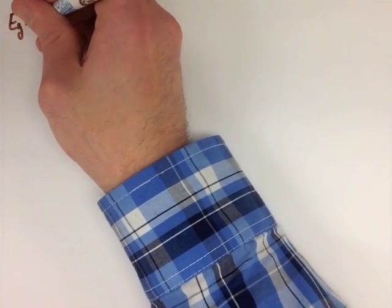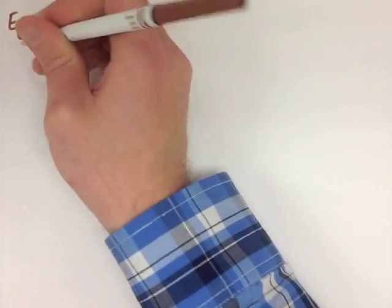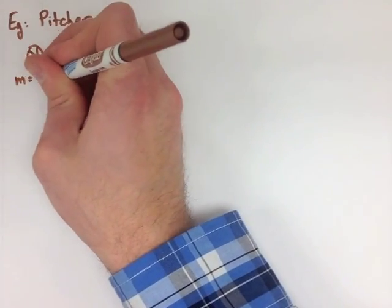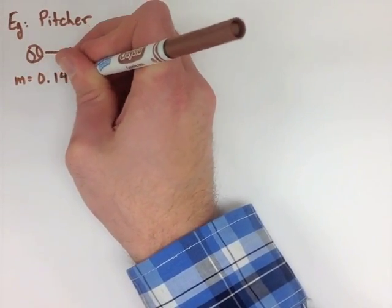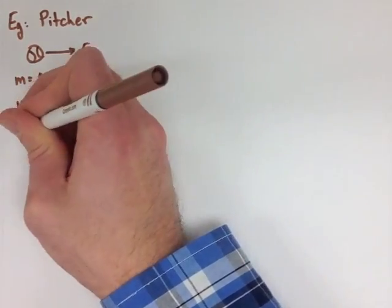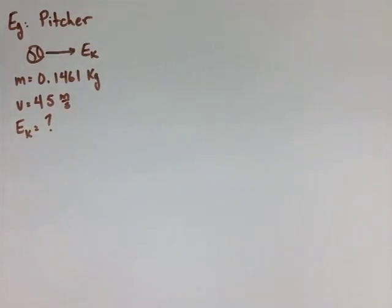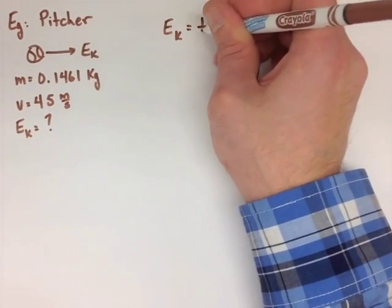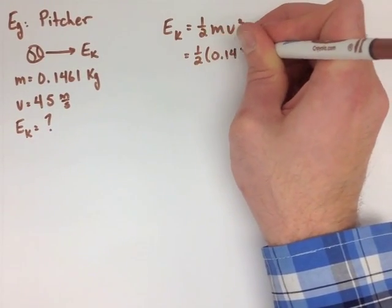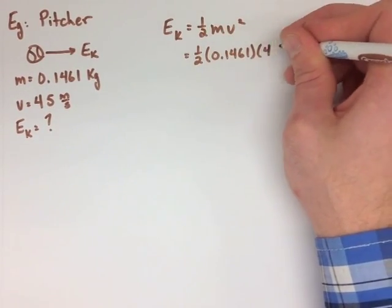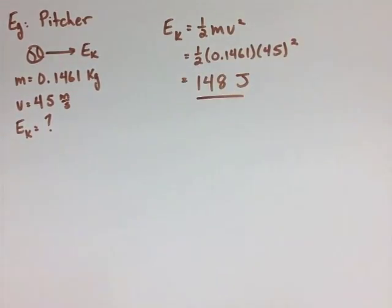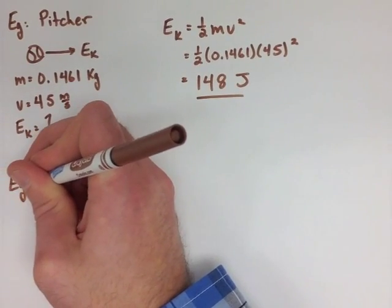We're now going to look at two examples. First, where we have velocity and mass and we're trying to find kinetic energy. Second, where we have kinetic energy and mass and we're trying to find velocity. If we have a pitcher pitching a baseball which is 0.1461 kilograms at a velocity of 45 meters per second, we find our kinetic energy by plugging into ½mv², and we end up with 148 joules.